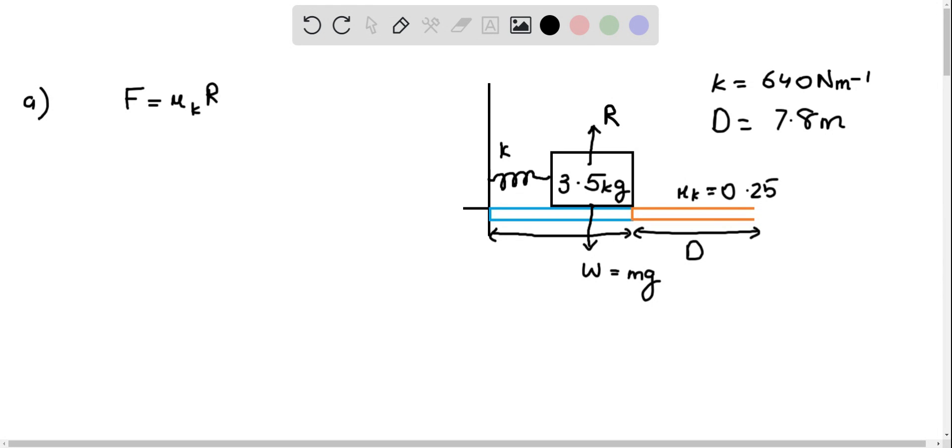Now, there is no net vertical acceleration, so the contact force must be equal to the weight. That means that R equals mg, and we can go ahead and make the substitution in our first formula, so that gives F equals mu sub k times mg.